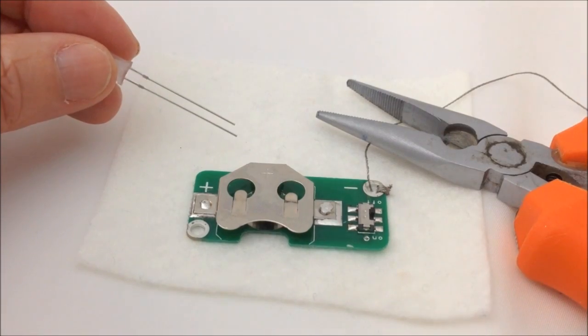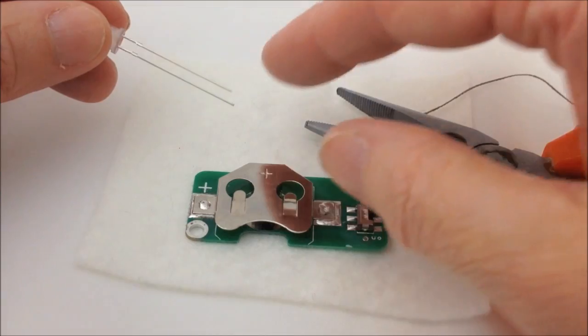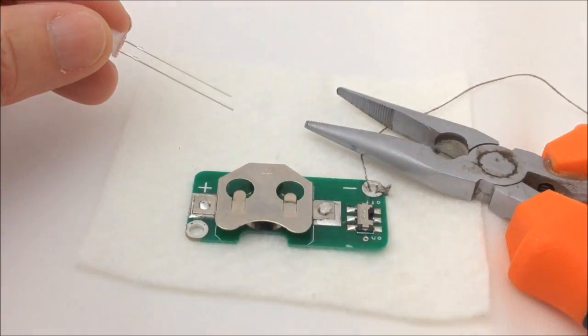So what I'm going to do now is to use some round nose pliers to twist the negative leg into a small loop. To do this I'm just going to grab hold of the very tip of the negative leg and just twist the pliers round.